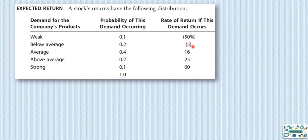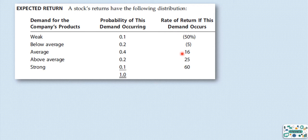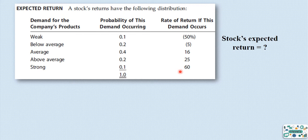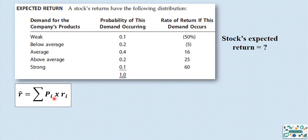Given these different expected rates of return — for example, losing 50% if demand is weak, or earning 60% if demand is strong — what is the most expected rate of return? Because at the end, one scenario will occur, so what is the most expected rate of return? To calculate this expected rate of return, we apply this formula: the probability of each scenario, PI, multiplied by the return of each scenario, RI.